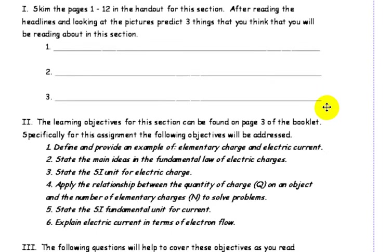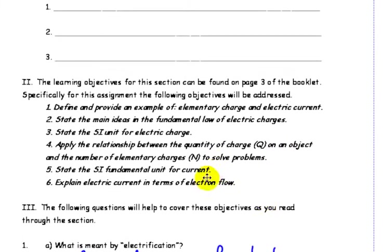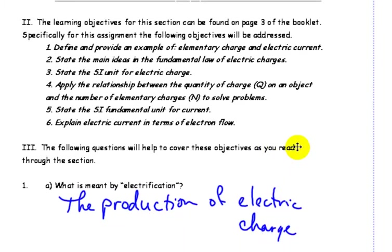And what we're looking at here is define and provide an example of elementary charge on electric current. State the main ideas in the fundamental law of electric charges. State the SI unit for electric charge. Apply the relationship between quantity of charge on an object and the number of elementary charge to solve problems. State the SI fundamental unit for current. And explain electric current in terms of electron flow.